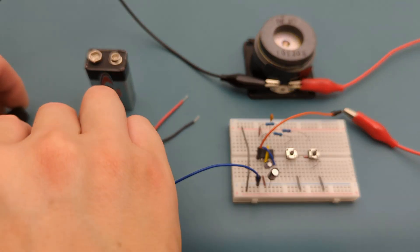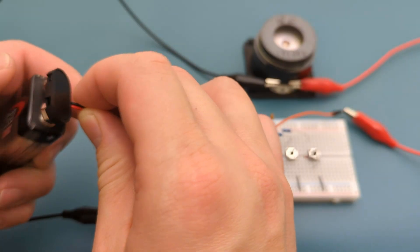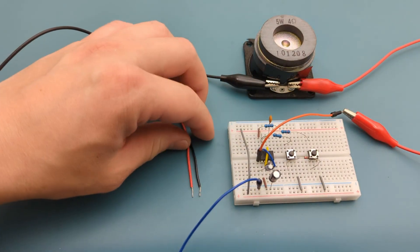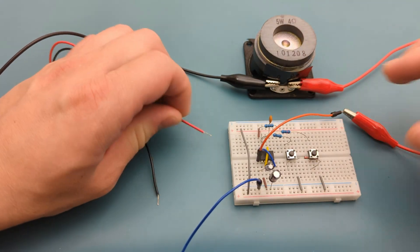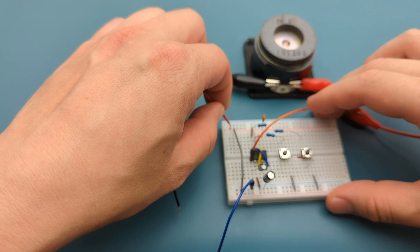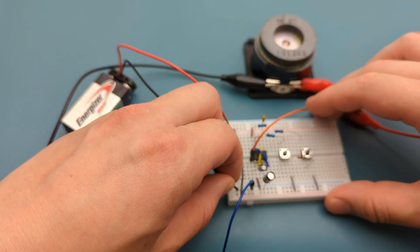It's time to connect the power supply. Connect the 9 volt battery buckle connector to the 9 volt battery. Attach the positive lead from the battery holder to the positive rail. Attach the negative lead from the battery holder to the negative rail.